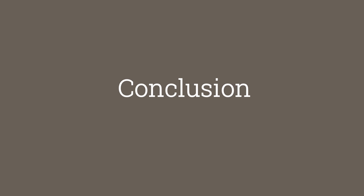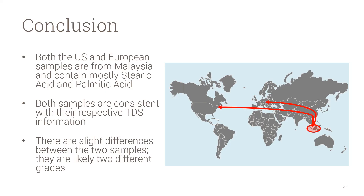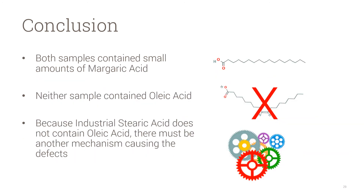And next, to the conclusion. Both the U.S. and European samples come from Malaysia and are mostly composed of stearic and palmitic acids. It is likely, however, that they are two different grades of industrial stearic acid — I have since learned that the European sample is actually a pharmaceutical grade. Additionally, both samples contained a small amount of margaric acid. Most importantly, neither industrial stearic acid sample contained oleic acid, which means the defects are likely caused by another mechanism.